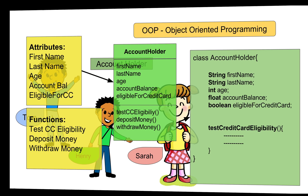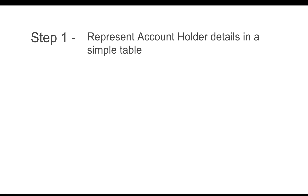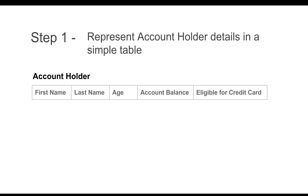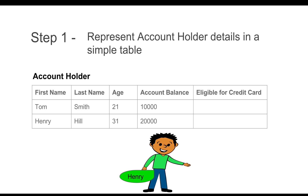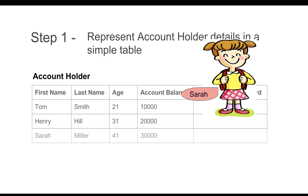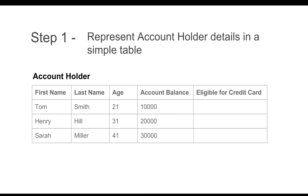We are going to look at how exactly we do it practically. Step one: we are going to represent the account holder details in the form of a very simple table. Let us create an account holder table where the column names will be the variables — first name, last name, age, account balance, eligible for credit card. If we put in the values for Tom, we will have first name as Tom, last name as Smith, his age and his account balance. Similarly for Henry and Sarah, we can put down their values.